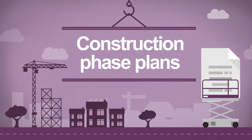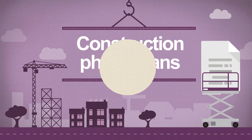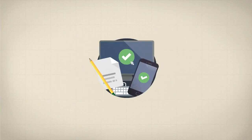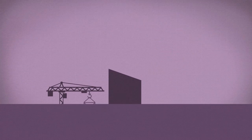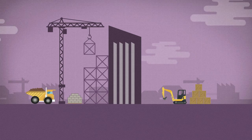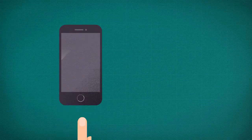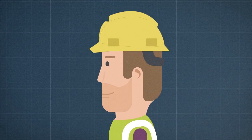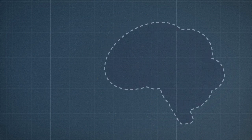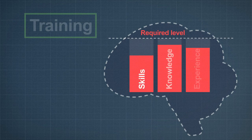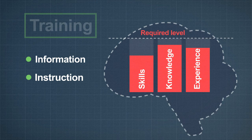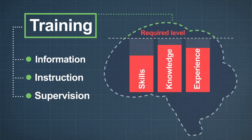Construction Phase Plans: under the new regulations, all construction work must have a construction phase plan drawn up before work starts. The plan should reflect the project's size and nature of risk, so simple jobs only need a simple plan. All contractors must ensure their workers have the right skills, knowledge, training and experience to do their job, and provide appropriate levels of information, instruction and supervision.